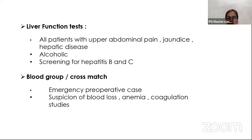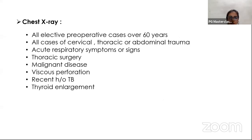Blood group and cross-match must be done in all emergency preoperative cases and when there is suspicion of blood loss, anemia, or altered coagulation studies. Chest X-ray is indicated in all elective preoperative cases over 60 years, all cases of cervical, thoracic, or abdominal trauma, patients with acute respiratory symptoms, thoracic surgeries, malignant diseases, viscus perforation, patients with history of TB, and patients with thyroid enlargement.